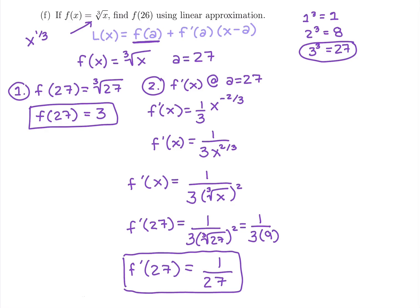We have our two pieces for the approximation. We are ready to write out L of x. So L of x would be 3 plus 1 over 27 times x minus 27.